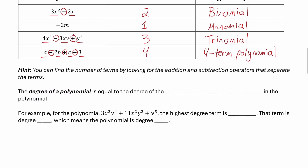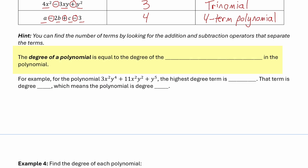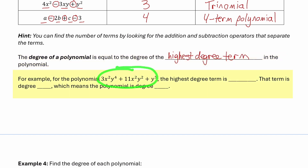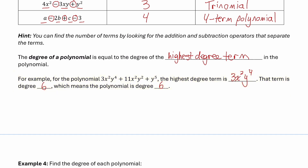Now let's look at how we find the degree of a polynomial. The degree of a polynomial equals the degree of the highest-degree term in the polynomial. For example, the polynomial 3x squared y to the 4 plus 11x squared y squared plus y to the 5 has three terms. The first term is degree 6, the middle term is degree 4, and the last is degree 5. So the highest-degree term is 3x squared y to the 4, which is degree 6 — meaning the degree of the entire polynomial is 6.